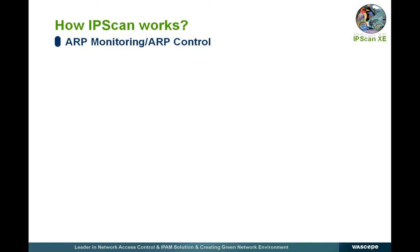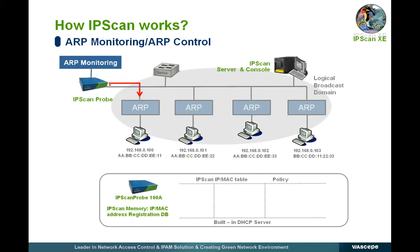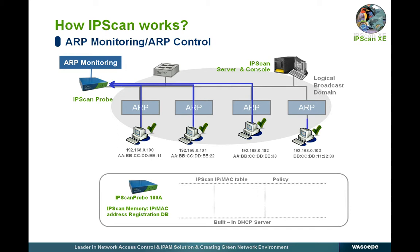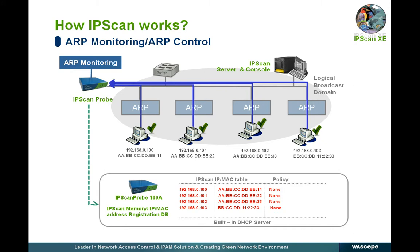The IP scan probe uses the ARP protocol to monitor user IPs and MAC addresses in the same broadcast domain in real time. In order to find out the IP and MAC addresses of the PCs in the monitoring range, the probe requests users in each range for ARP information. Users asked for ARP information will transfer their IP and MAC information, and the probe then transfers that information to the IP scan server and saves it in the DB server.